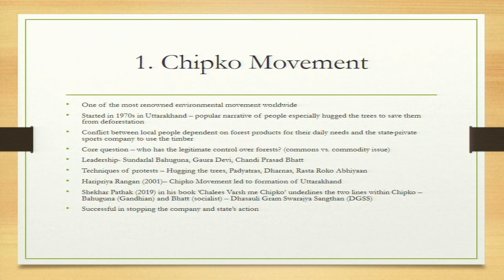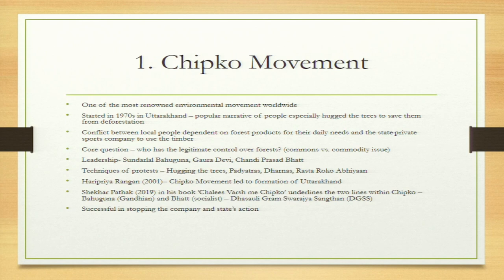Chipko took place in the 1970s — a very important juncture when at the global arena the issue of environment was emerging, with terms like sustainable development becoming part of wider discourse. In the 1970s, women hugged trees to save them from deforestation, in a conflict between local people dependent on forest products for their daily needs and the state, which was promoting a private sports company to use timber. Companies had state support, but on the ground people were resisting.